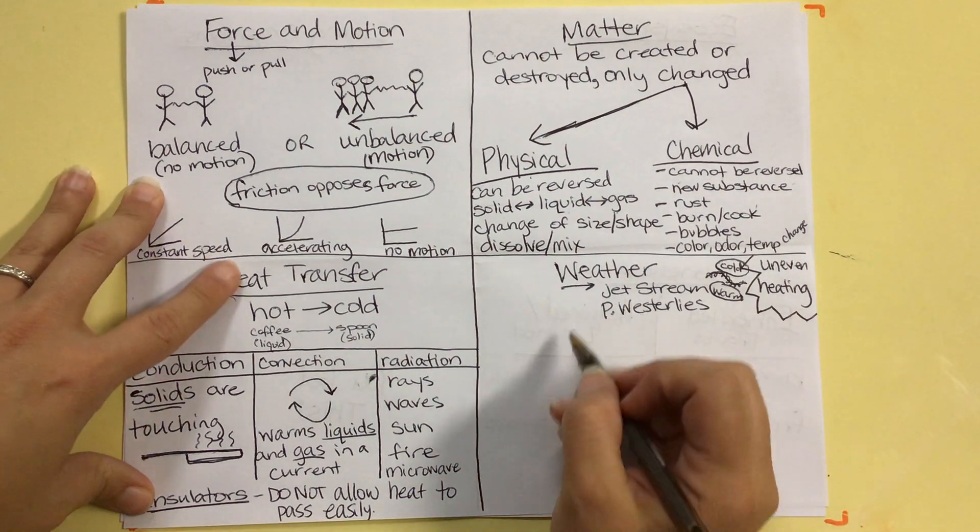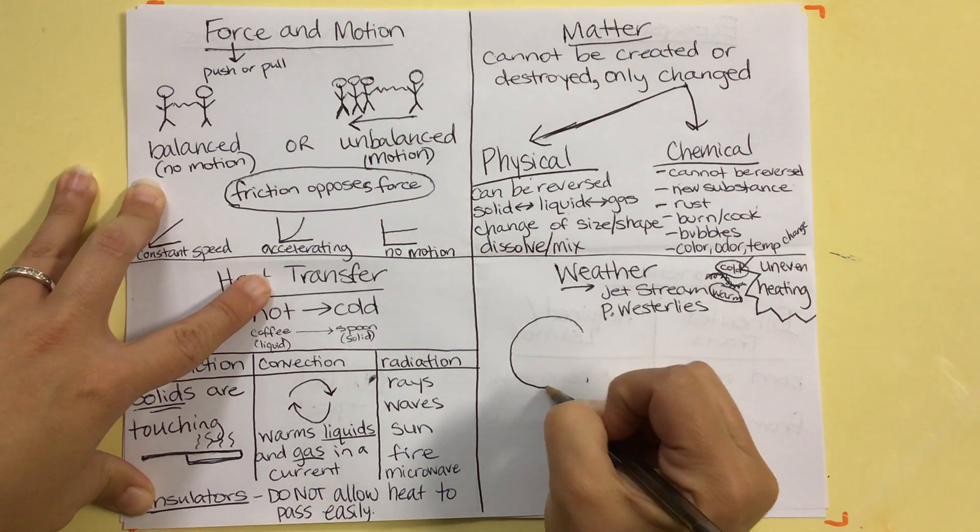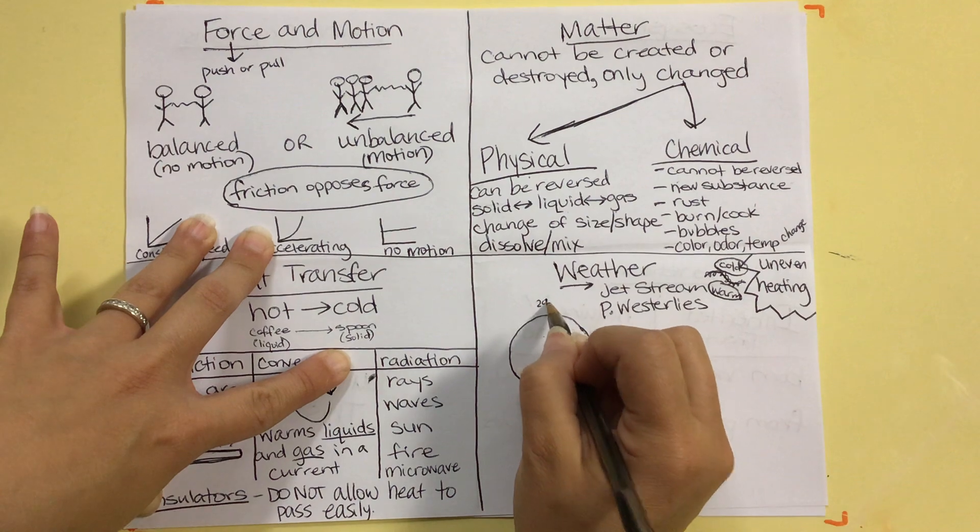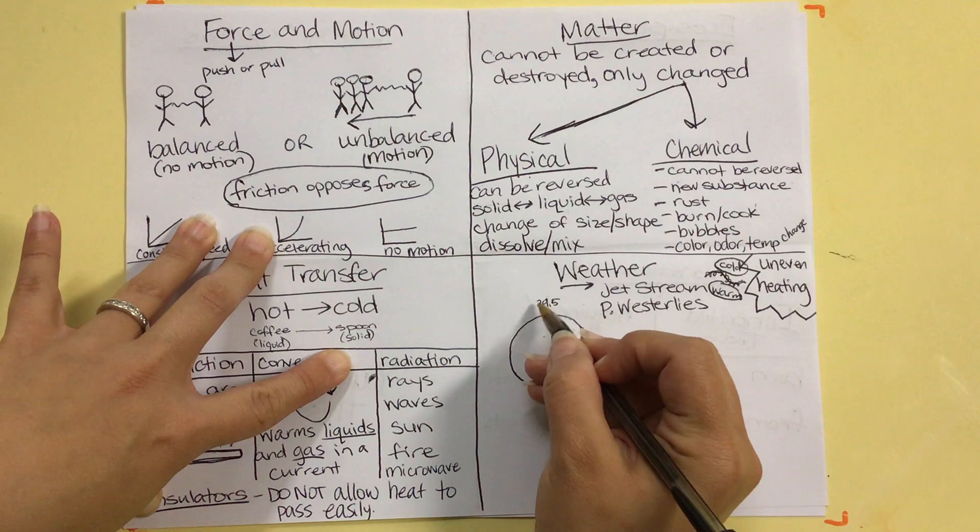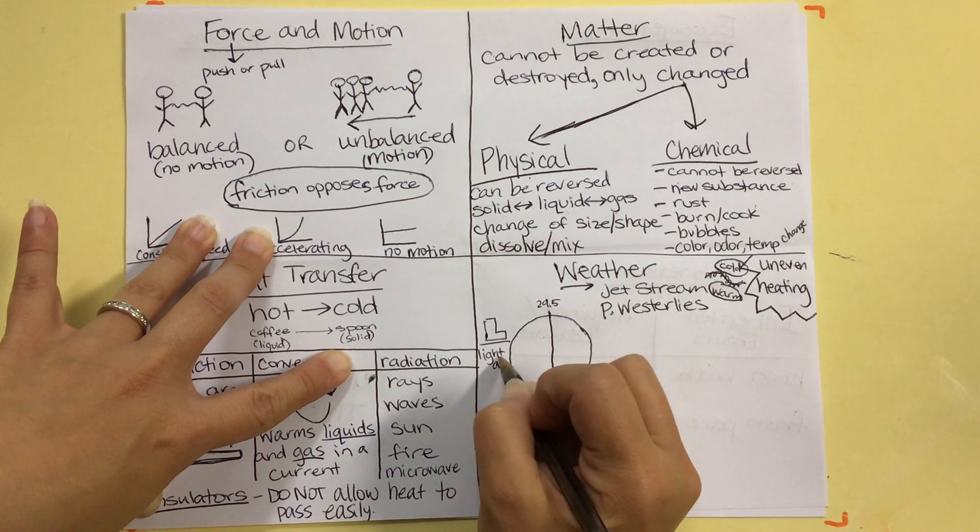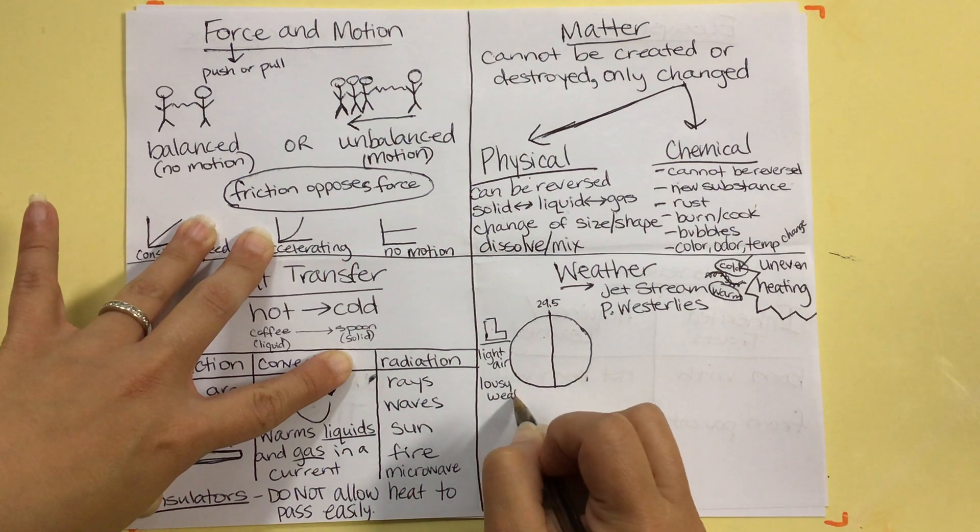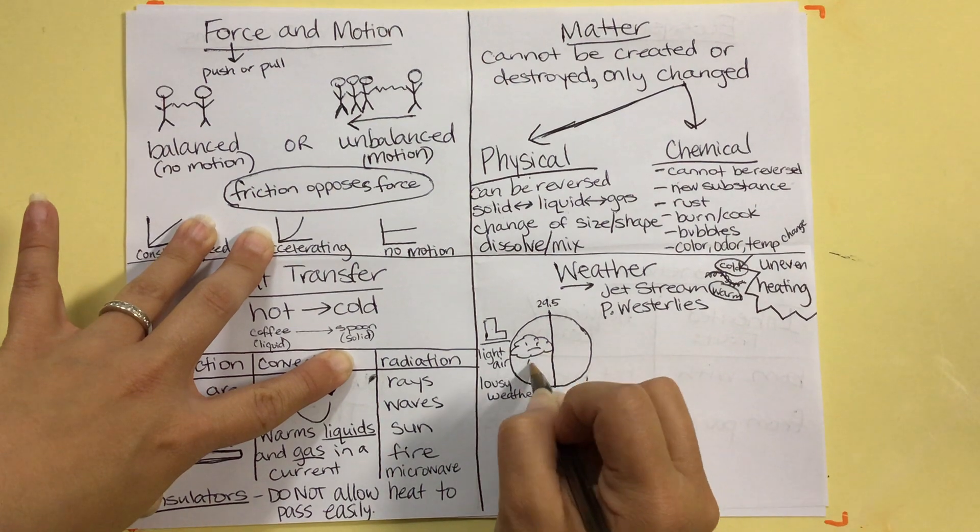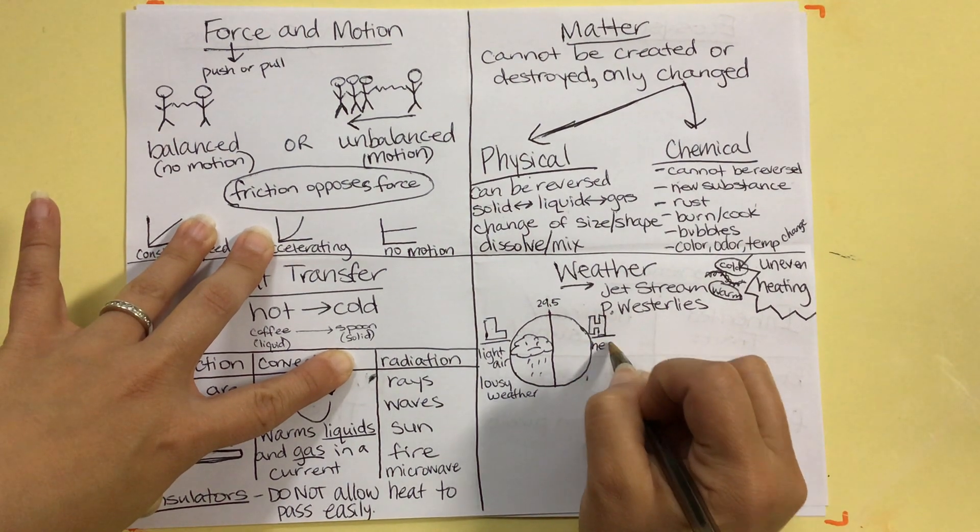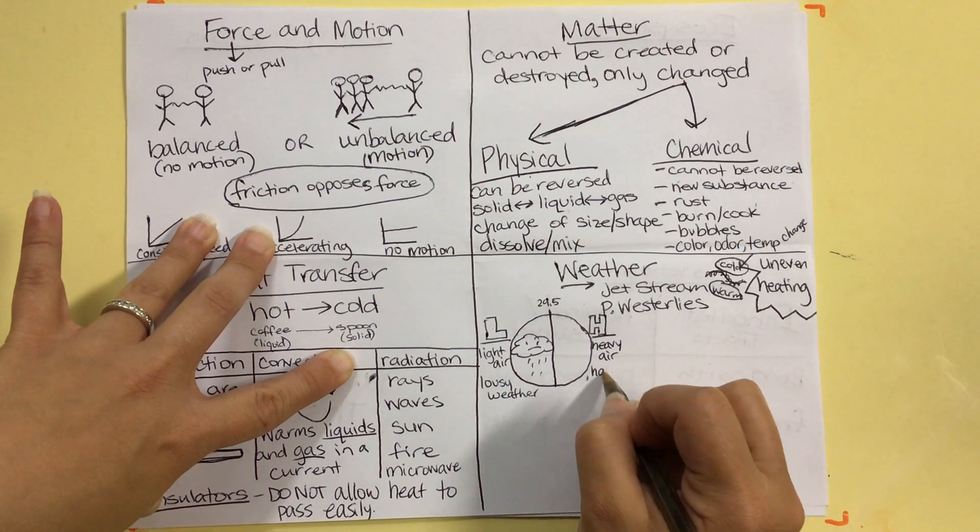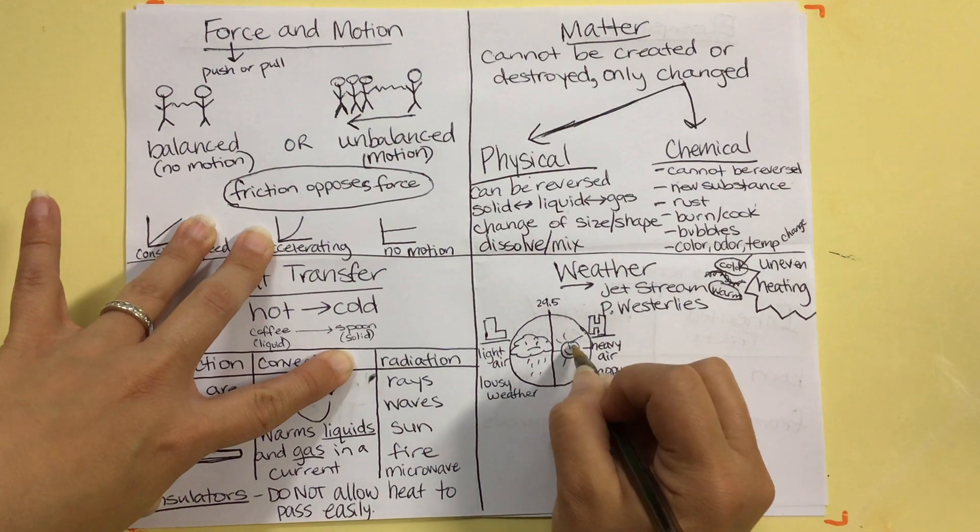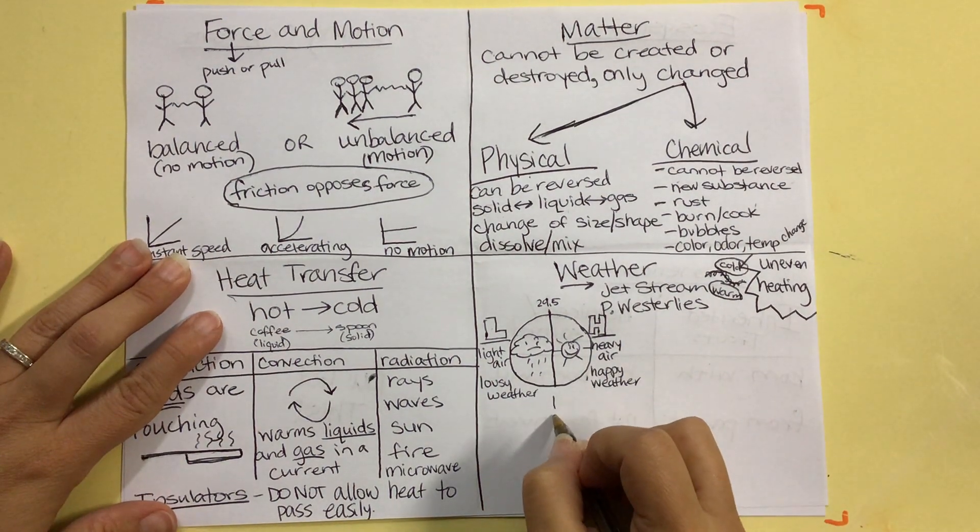Alright, weather. Your must-have for your brain dump is the barometer. Ms. Hernandez's favorite weather tool because it helps us to predict the weather. It is the most reliable. 29.5 goes in the middle. It measures the weight of the air. And, on the left side, that's our low-pressure side. So, low-pressure brings light air, which is lousy weather. And, we know that that lousy weather looks like a rain cloud. So, we're going to go ahead and draw a rain cloud. And, on the right side, the high side, high-pressure is heavy air. And, it brings happy weather. And, happy weather looks like a super smiley sunshine. Okay? Or, we sometimes see fair weather. I'm going to add your little dotted lines there.